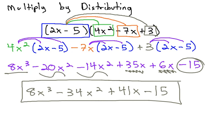Giving us our final answer of 8x cubed minus 34x squared plus 41x minus 15.